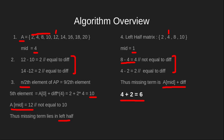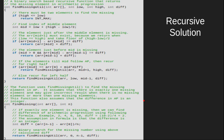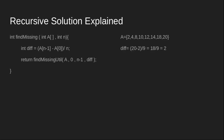Now let's see the implementation. Here you can find the whole code for our problem. We have a function called find_missing which calls find_missing_util and provides the difference. For our array, the difference would be (last - first) / n, and then we call find_missing_util with the array, low, high, and difference, so that we can divide the array.